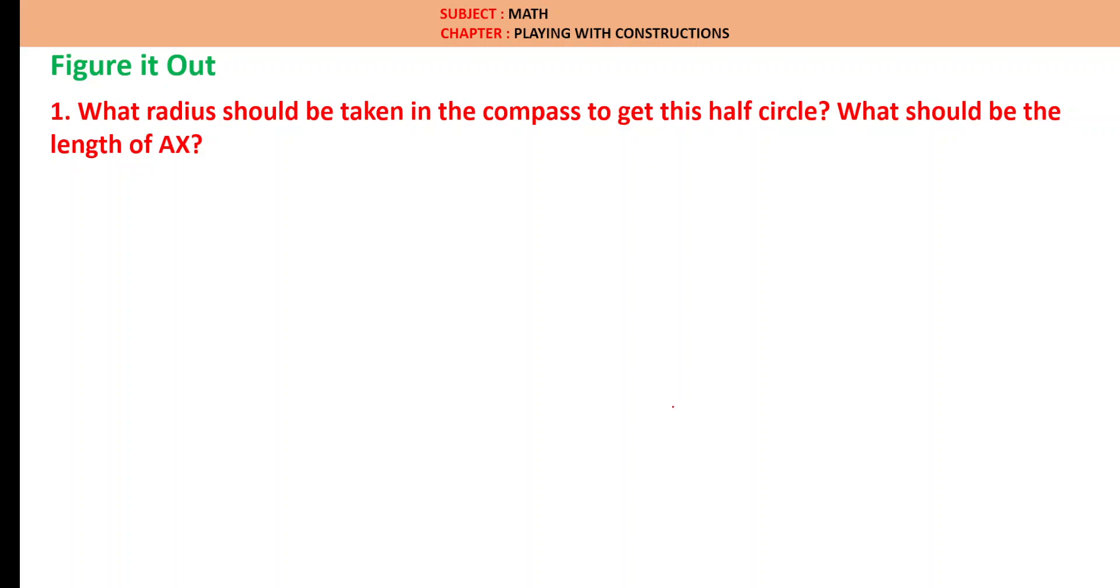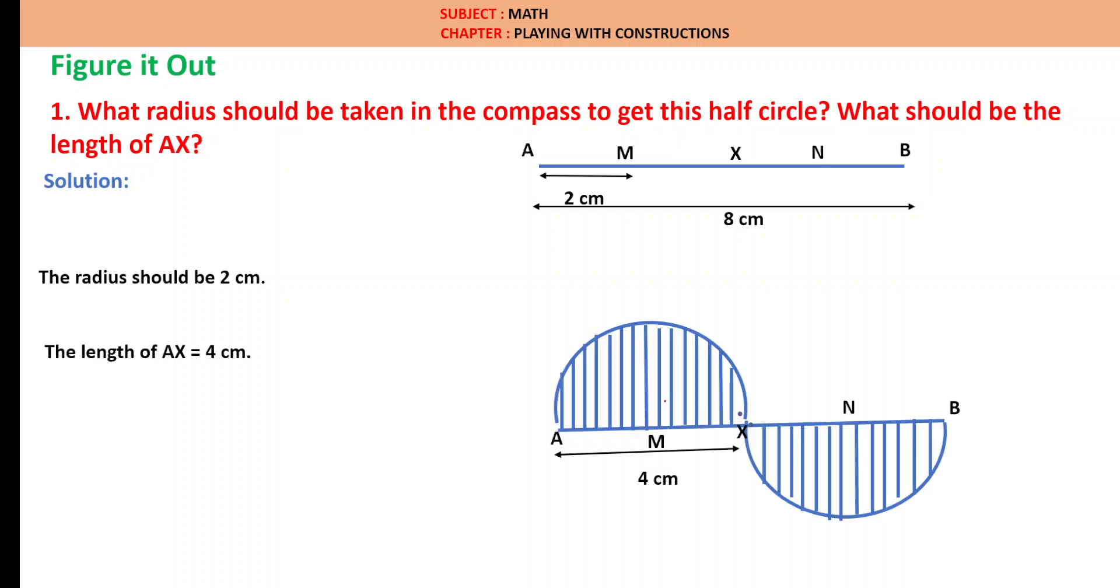Figure it out: What is the radius should be taken in the compass to get this half-circle? What should be the length of AX? Solution: As AB is equal to 8 cm and AM is the radius, should be 2 cm. Therefore, AX will be 2 times the radius. Therefore, AX is equal to 4 cm.